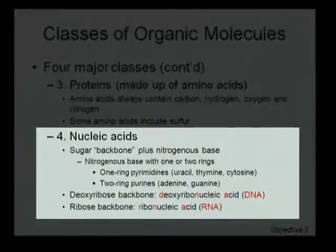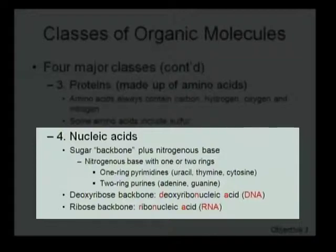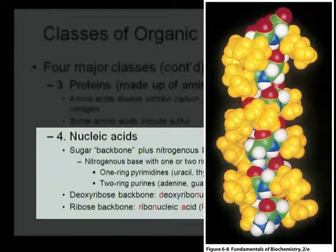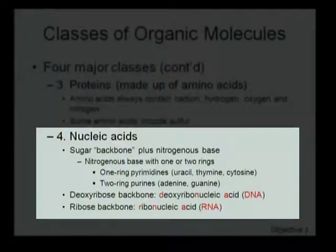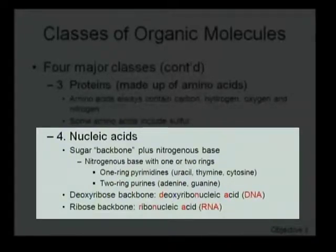The fourth and last major class of organic molecules we're going to study are the nucleic acids. Nucleic acids are made up of a backbone of sugars — those carbohydrates we saw earlier — plus what's called a nitrogenous base. Nitrogenous means arrangements of atoms that have a higher proportion of nitrogens in them. They still have carbons, but a lot of nitrogen mixed in. These form ring structures where the atoms come around and bind back to themselves.